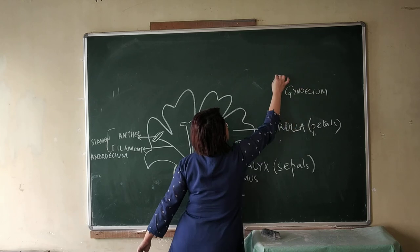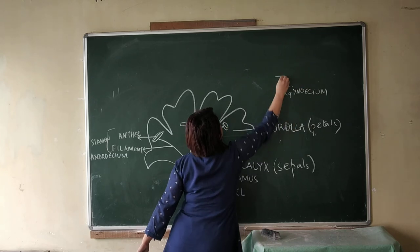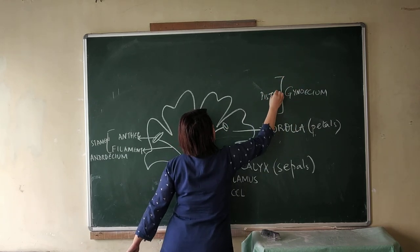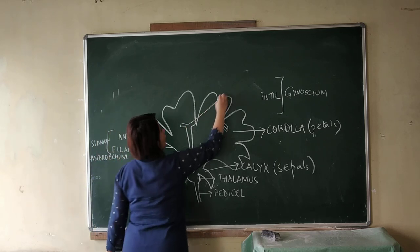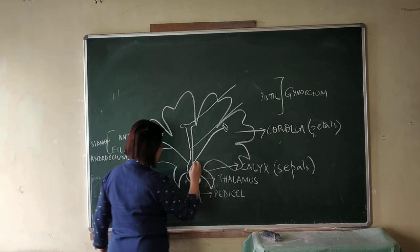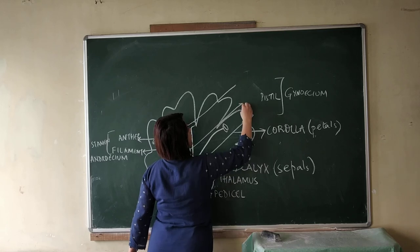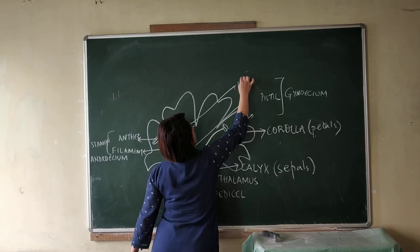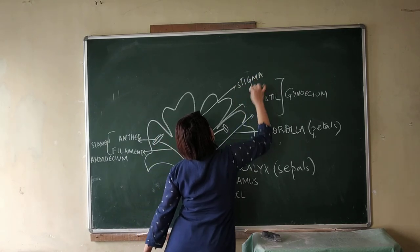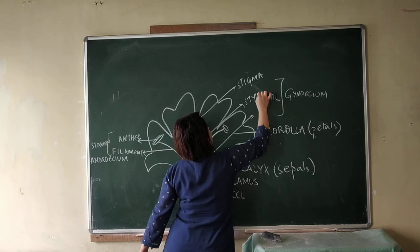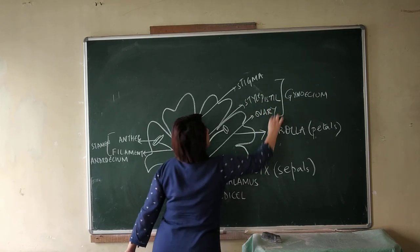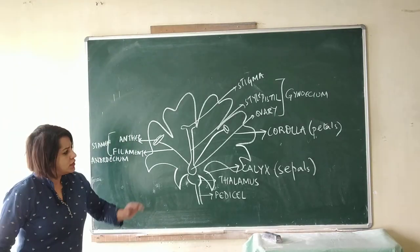It consists of pistils. And the pistil has three parts: stigma, style, and ovary. So this is just a revision of what we did last time.